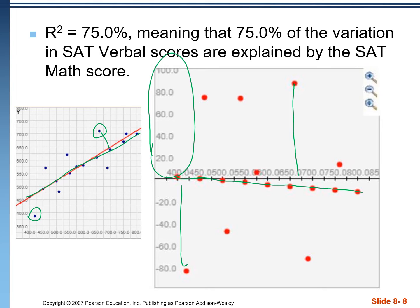This is a lot more realistic number considering the context of the problem. When we have someone's SAT math score, we can usually use that to get a general idea of how well they do on the verbal section, but it's not going to be an exact match — not 100% like the first example or even 99.8% like the second one. Obviously, the higher the r-squared is, the better our predictions are. The lower it is, the farther away our predictions are and the more scatter there is in the scatter plot.